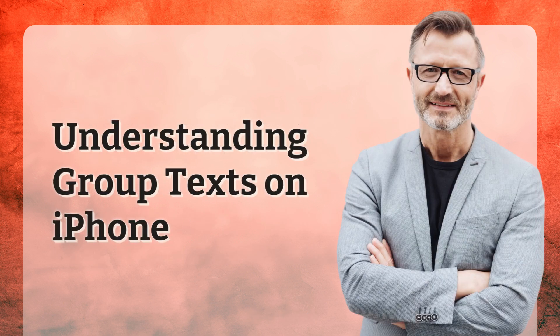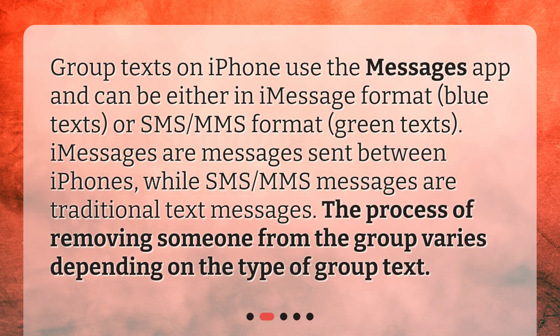Group texts on iPhone use the Messages app and can be either in iMessage format — blue texts — or SMS/MMS format — green texts. iMessages are messages sent between iPhones, while SMS/MMS messages are traditional text messages. The process of removing someone from the group varies depending on the type of group text.